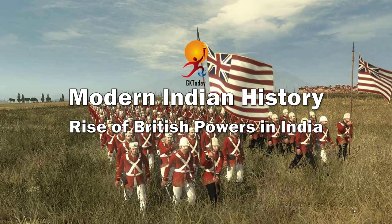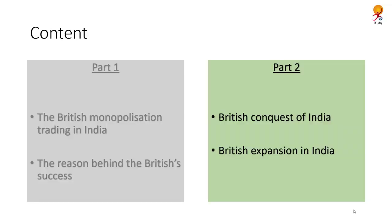Hi everyone, today is the second lesson in our weekly series of modern Indian history. Today we learn about the rise of British powers in India, and this is the part 2 video for this topic. This discussion has four parts. In part 1 we already discussed the arrival of English traders, how they monopolized trade in India, and the reasons behind their success.